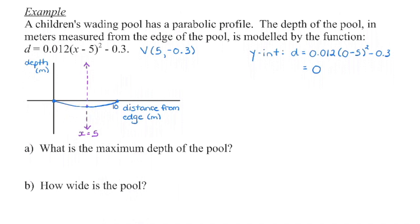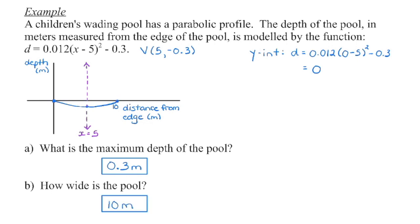Now we can answer what we're being asked. What is the maximum depth? Depth is on the y-axis, so the maximum depth will be the y-coordinate of that vertex — 0.3 meters below the surface. How wide is the pool? Based on our sketch, we're going from 0 to 10, so the pool has a width of 10 meters.